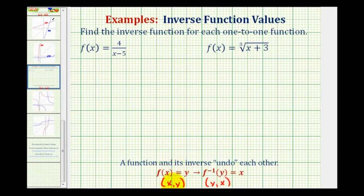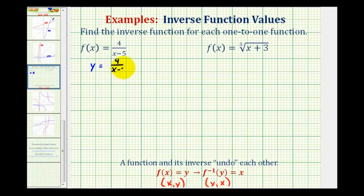So if we have a point on a given function and we interchange the x and y coordinates, we'll find a point on the inverse function. We can use this idea to determine the equation of inverse functions. The first step is to replace f of x with y, writing the same function in terms of x and y. So we'll have y equals four divided by the quantity x minus five.